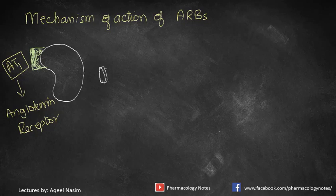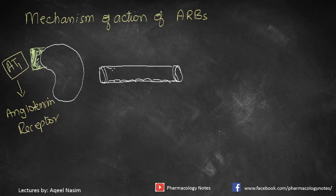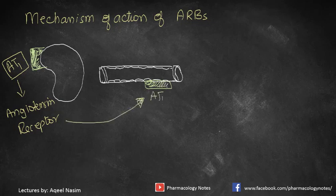The AT1 receptors, as discussed, are found on kidneys as well as blood vessels. AT1 receptors are responsible for the binding of angiotensin 2, which was formed as described previously in the lecture on ACE inhibitors.